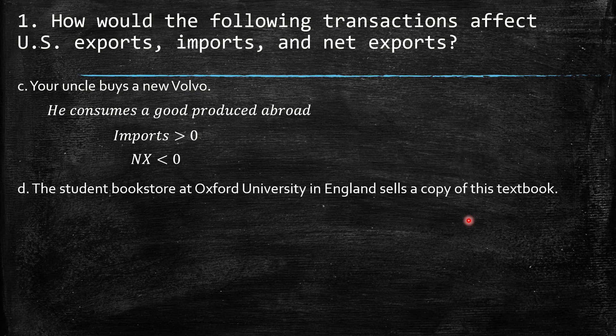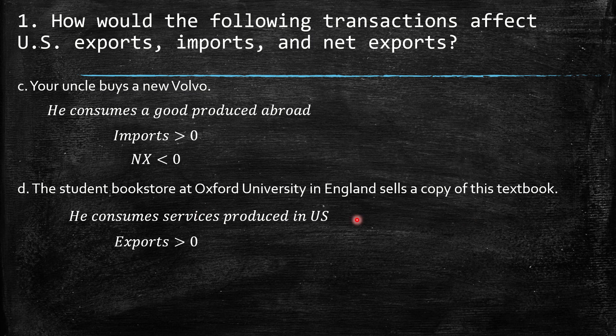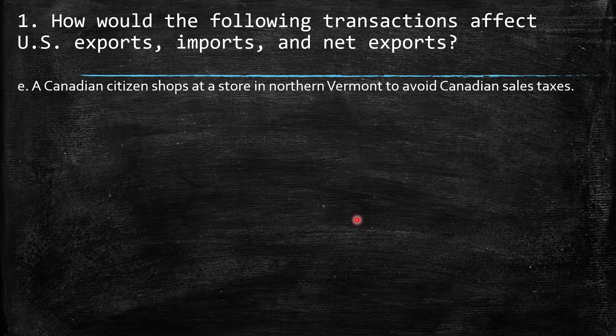D: The student bookstore at Oxford University in England sells a copy of this textbook. The student is consuming a good — this is not a service — a good produced in the US. So we have an export increase, and as a consequence, a net export positive change.